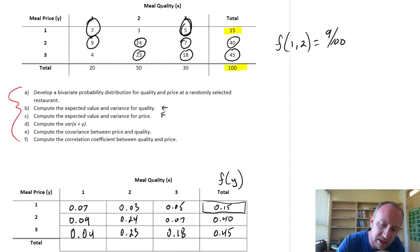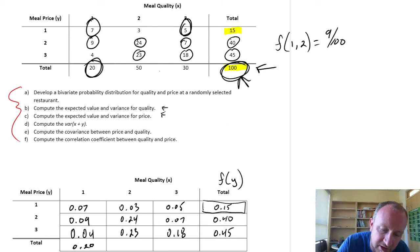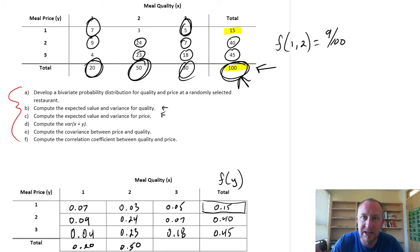Then we also need those frequencies looking at just meal quality. So a randomly selected restaurant, what's the probability that it falls into the poor quality? So that's going to be of those 100 restaurants, 20 of them were rated or were found to be of poor quality. So this is just going to be 0.20. Similarly, of those 100 restaurants, 50 of them were found to be of medium quality. So here, this is going to be 0.50. And again, of those 100, 30 of them were found to be of high quality. So that's just 0.30.